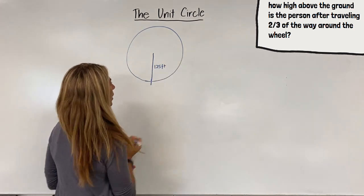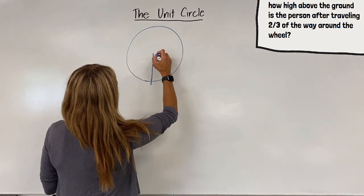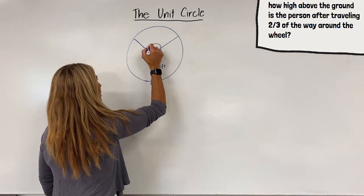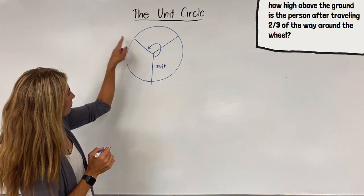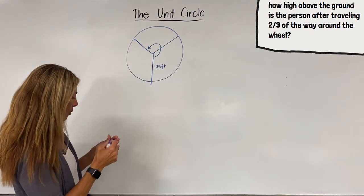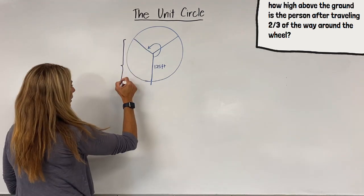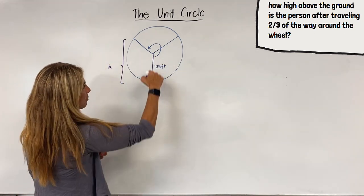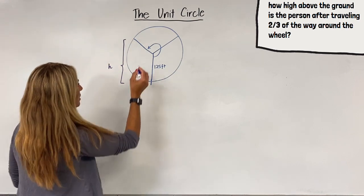So if we go two-thirds of the way around, well if we break our circle up into thirds, two-thirds of the way around would put us in this position. So the question is how far above the ground is the person? We're going to label that as our height. Well we already have this portion of our height, so we're just missing the small piece.